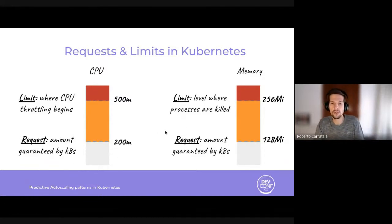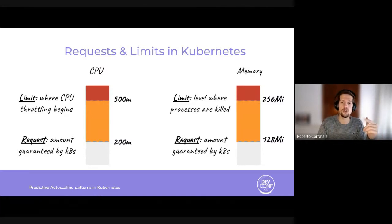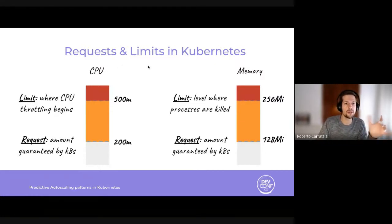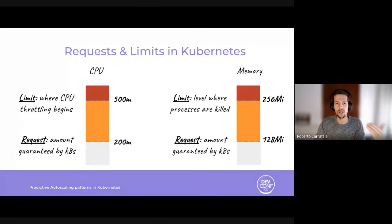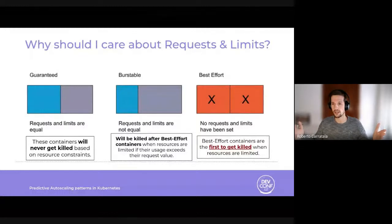On the other hand, the limit value specifies the maximum value a container can consume. Limits are used to restrict the maximum amount of resources a container can use at runtime. When talking about requests and limits, we also need to discuss the quality of service that Kubernetes will assign to your pods. Why should you care about requests and limits? Because Kubernetes defines a number of different quality of service types based on how requests and limits are specified.